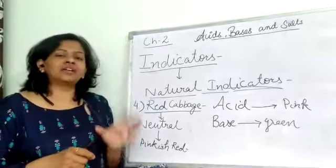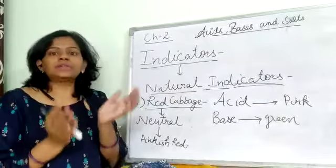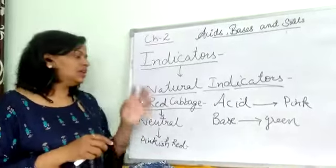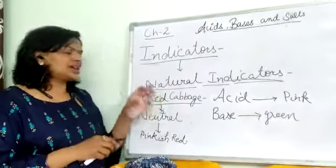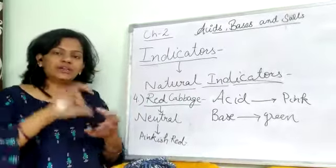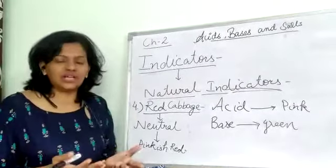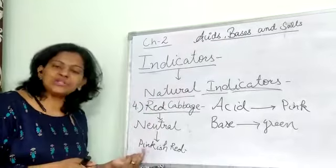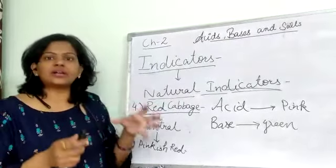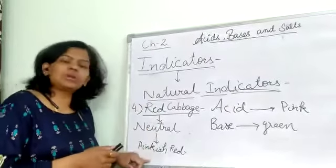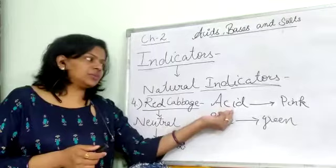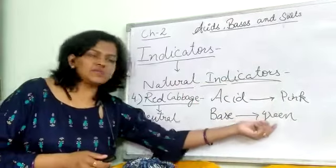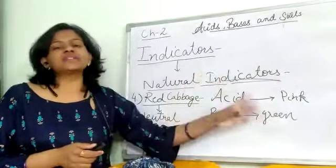The fourth natural indicator is red cabbage, which we have seen in the market. Red cabbage is also used as an indicator. We take the leaves and extract liquid from them. The neutral color of the extract is pinkish-red. In the presence of acid it remains the same pinkish-red, but in the presence of base it changes to green.